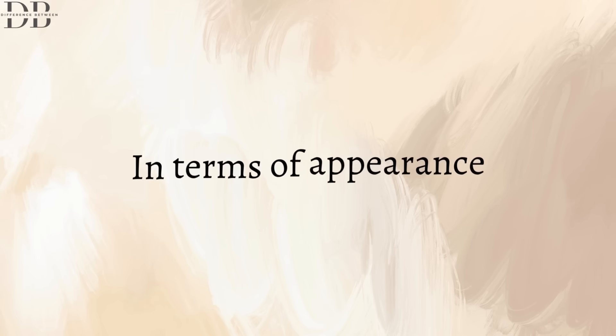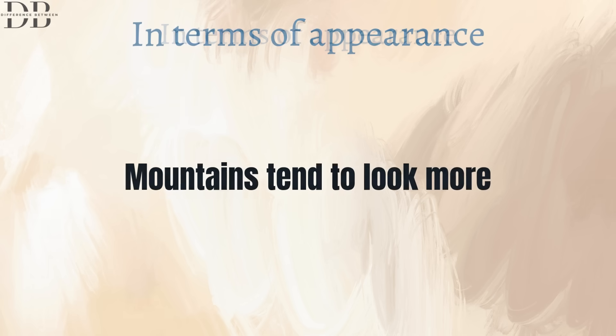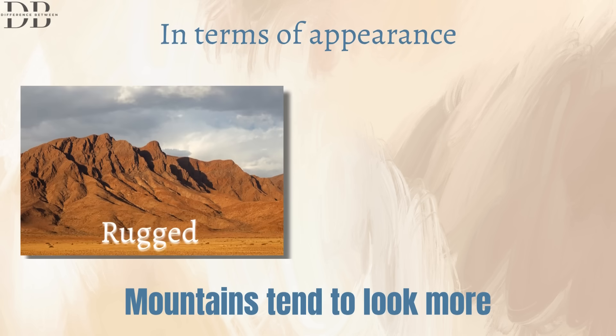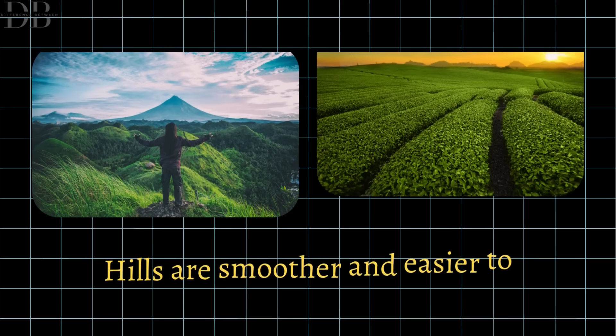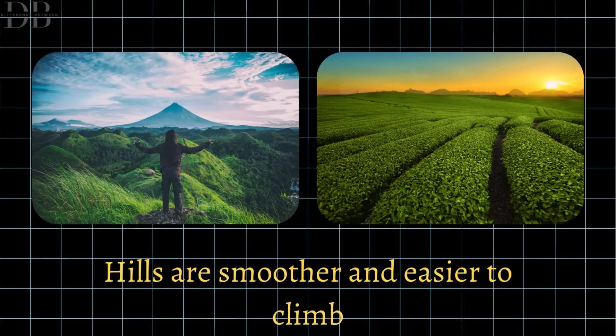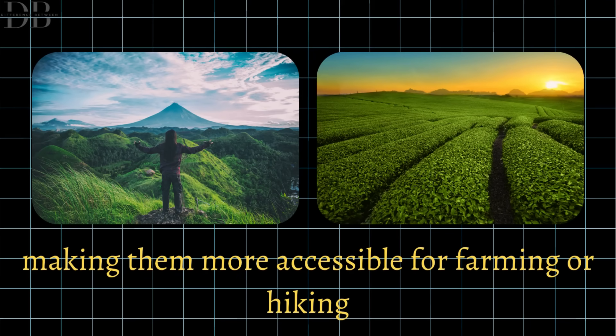In terms of appearance, mountains tend to look more rugged and dramatic, often snow-capped at the top. Hills are smoother and easier to climb, making them more accessible for farming or hiking.